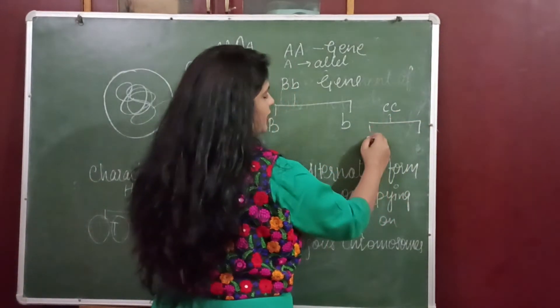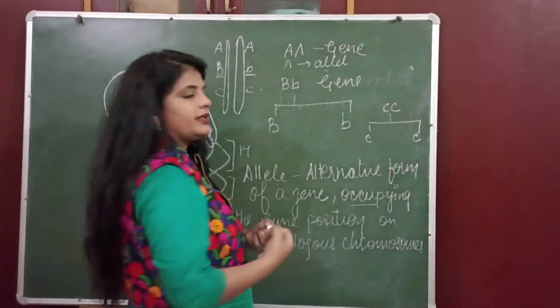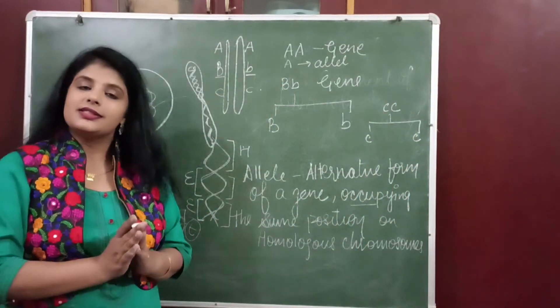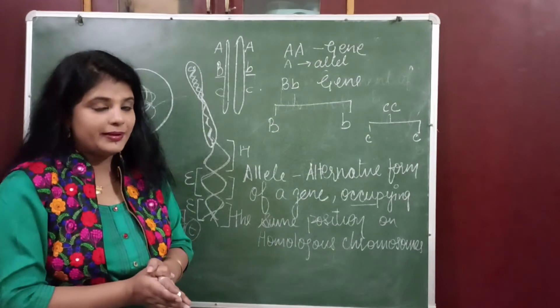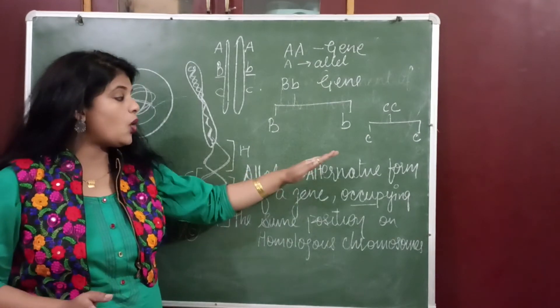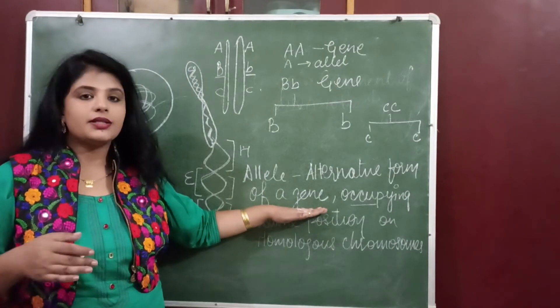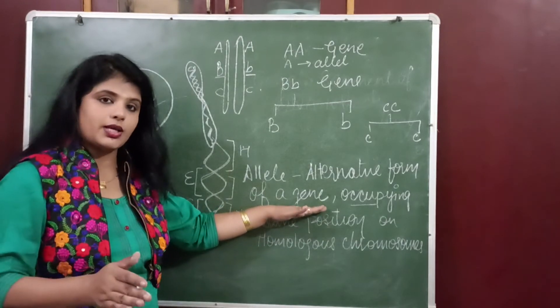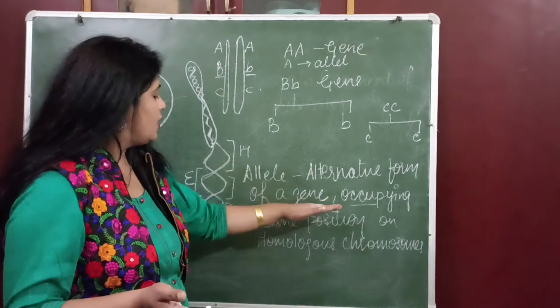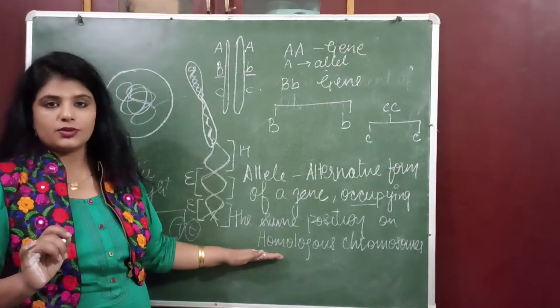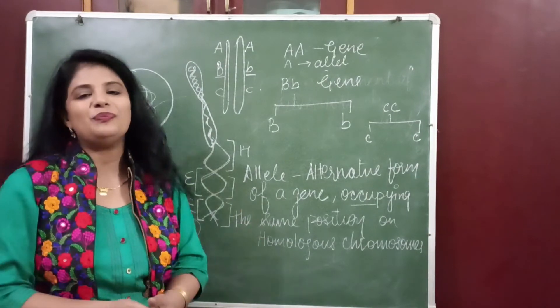So I hope here we are clear that gene is the segment of DNA and allele is the alternative form of a gene - that is tall or short for height - occupying the same position on homologous chromosome. I hope it is clear.